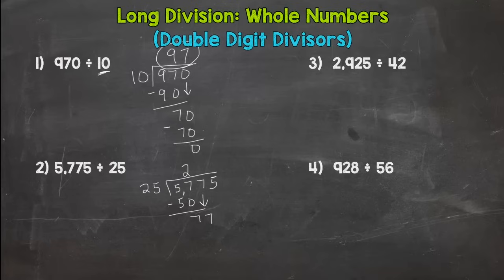So we have a 77 here. So how many 25s in 77? Well 25, 50, 75. Three groups of 25. 3 times 25 is 75. Subtract, I get 2, bring down my 5.